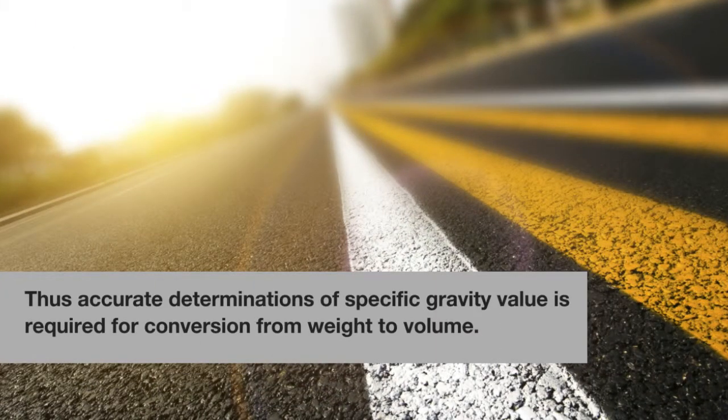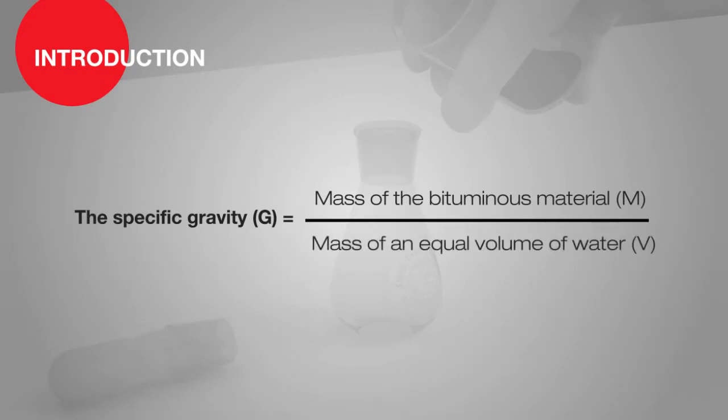The specific gravity G of the bitumen is defined as the ratio of the mass of the bituminous material M to the mass of an equal volume of water V at specified temperature of 27 degrees Celsius. That is, specific gravity of bitumen G equals mass M divided by volume V.